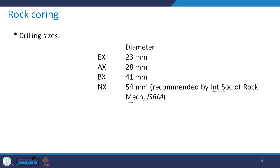Regarding drilling sizes, the International Society of Rock Mechanics (ISRM) recommends going for the NX size specimen, which has a diameter of 54 mm. However, there are three other sizes also: EX, AX, and BX, having 23 mm, 28 mm, and 41 mm diameter respectively. Most of the time we go ahead with the NX size specimen of 54 mm diameter — please remember this when we need to get samples from the field.